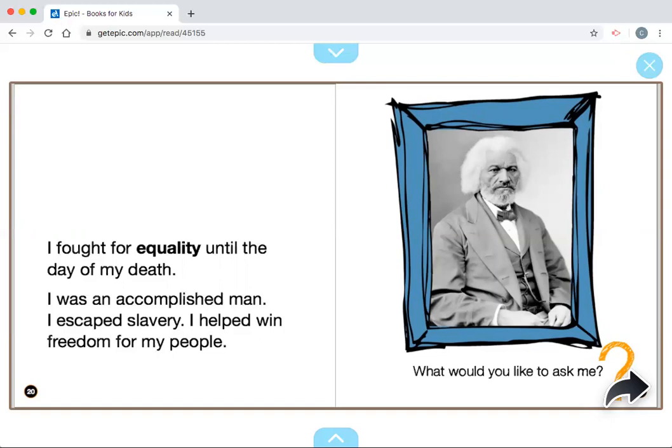I was an accomplished man. I escaped slavery. I helped win freedom for my people. Here's a question. What would you like to ask me? So, we learned that he was born into slavery. He escaped slavery. He used his voice and experience to talk about why slavery was bad. And he wanted to get equal rights for African American people. And he fought hard to make sure that happened. What's something that you would like to ask him? Take a second to think.